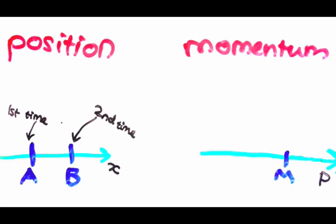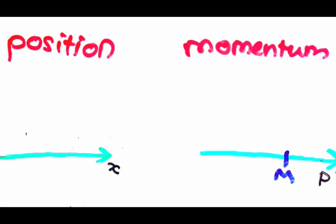Because by measuring the momentum, we actually change the particle's position wave function. The particle went from being in pretty much just one spot to being in many different spots. So you can see, we can never pin down both the momentum and the position of a particle. Why is that?